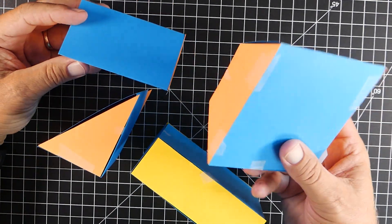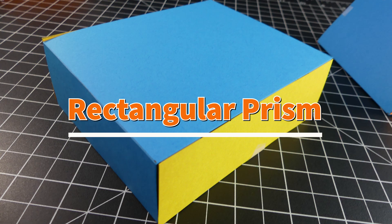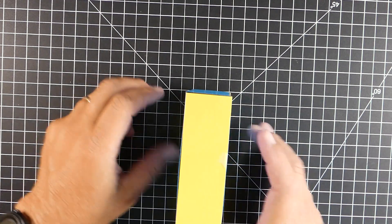So I have a couple triangular prisms, a trapezoidal prism, and a rectangular prism here. So let's look at the rectangular prism first, probably the most common one.